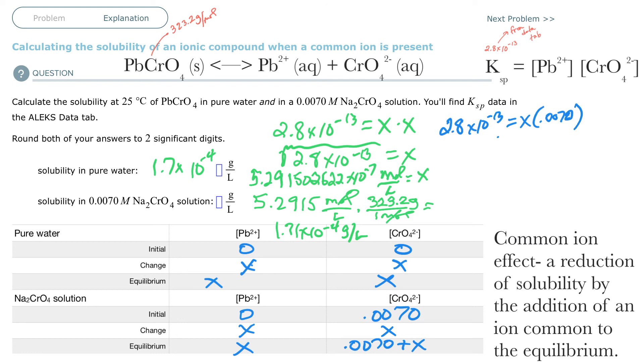And I get X to the negative 11 moles over liters. And then I do the same thing. I'm going to multiply it by 1 mole, 323.2 grams. Moles cancel. And I get X equals 1.2928 times 10 to the minus 8. I only want two significant digits here. So it's going to be 1.3 times 10 to the minus 8 grams per liter.